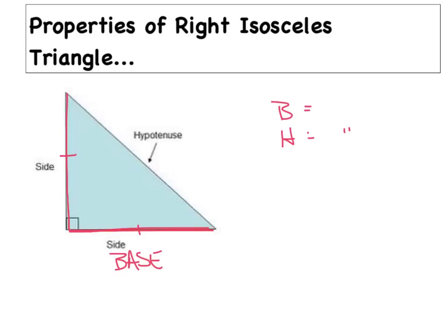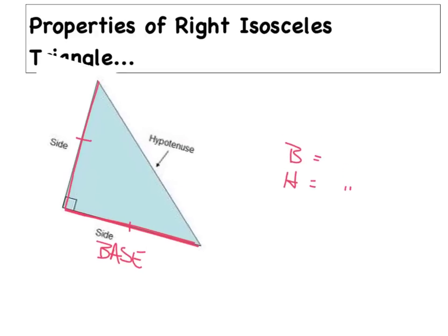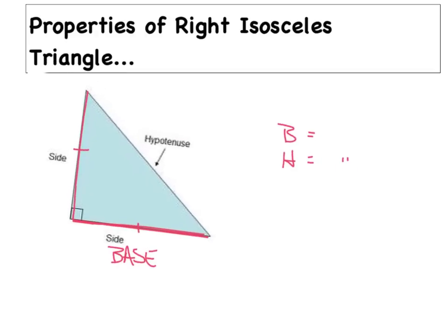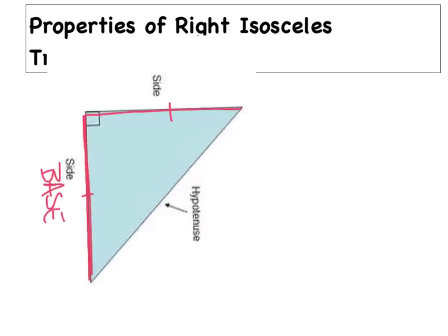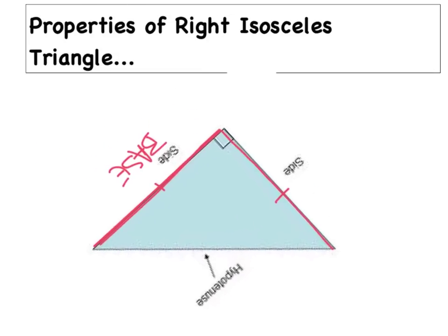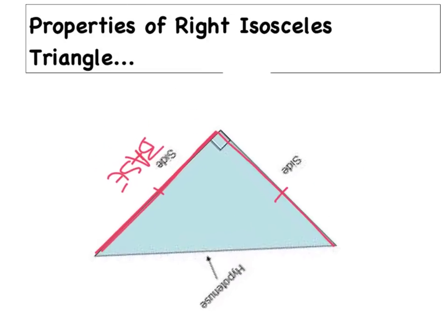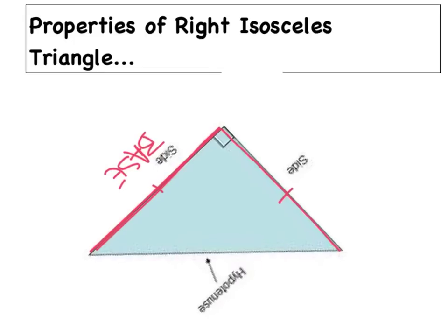Where things get interesting is when we rotate this for our second scenario. We're going to rotate the triangle and flip it around so that it's laying on its hypotenuse. Let's grab a new slide and take a look at how things change when it lays on its hypotenuse.